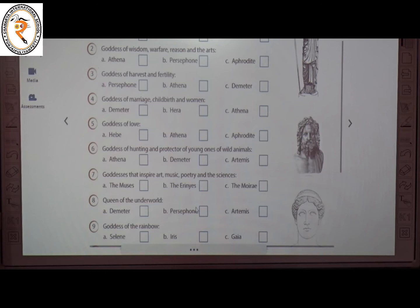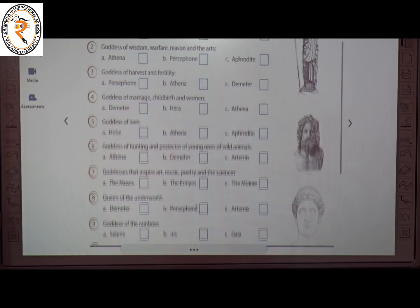The sixth one: Goddess of Hunting and Protector of young ones of wild animals. The answer is C — Artemis. The seventh one: Goddesses that inspire Music, Poetry and the Sciences. The answer is A — the Muses.